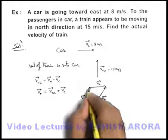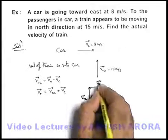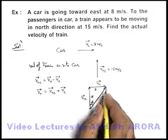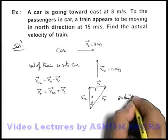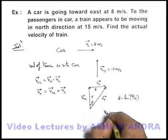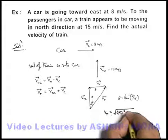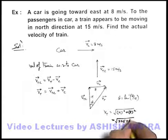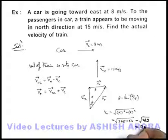The velocity of train with respect to car is 15 meters per second, and the velocity of car is 8 meters per second. The angle theta with which the train is moving in the direction east of north is theta equals tan inverse of 8 by 15. The magnitude of V_T is the square root of 15 squared plus 8 squared, which equals the square root of 225 plus 64, that is the square root of 289, which gives us 17 meters per second.